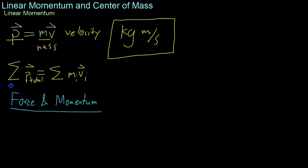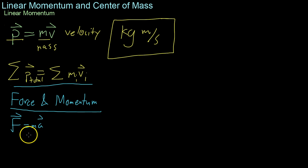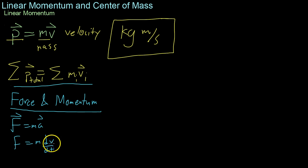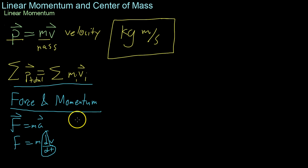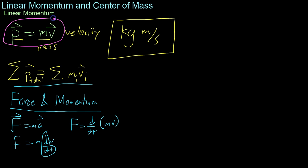Moving on from the definition of momentum and its sum total, we'll be looking at how force relates to momentum. We'll start off by defining force as F equals MA. Now, A is really the derivative of velocity with respect to time. If we separate this d/dt out from that velocity, we get that force equals the derivative with respect to time of M times V. We know from the definition of momentum that P is M times V, so force is really the derivative of momentum with respect to time.